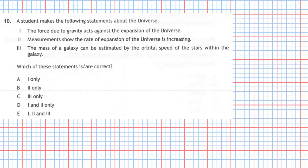Well, statement 1, the force due to gravity acts against the expansion of the universe, is in fact true because gravity tends to pull mass together. You have the expansion of the universe going outwards, but the force of gravity is trying to pull it all backwards. So statement 1 is correct.